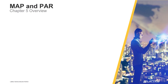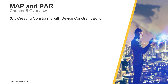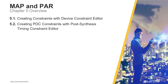Chapter 5 consists of seven sections. In the first section, Creating Constraints with Device Constraint Editor, we will introduce Radiant's Device Constraint Editor and how it can be used to create physical constraints for a project's device. In section 2, Creating PTC Constraints with Post Synthesis Timing Constraint Editor, Radiant's post-synthesis timing constraint editor is introduced and how it can be used to create timing constraints after synthesis. In section 3, Using Physical Designer, we will discuss Radiant's Physical Designer and what it can be used for.